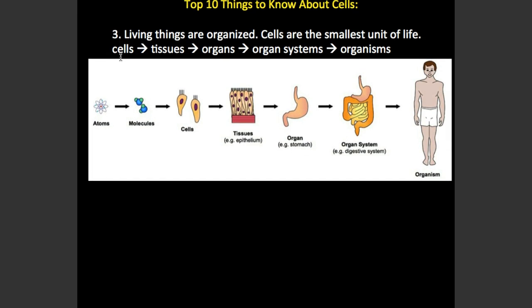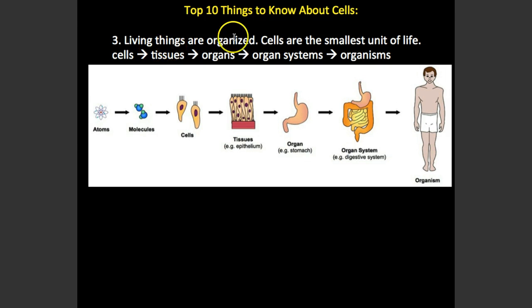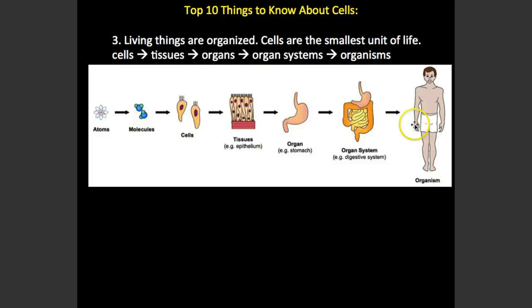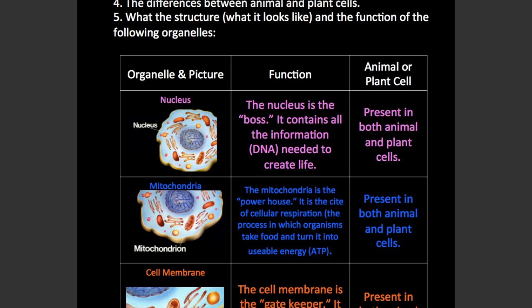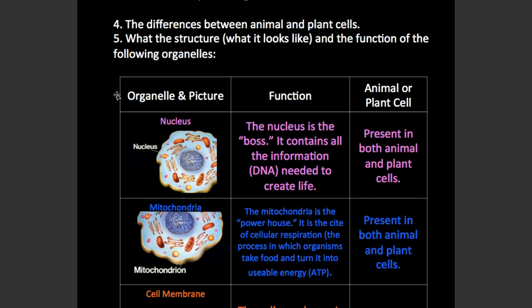All living things are organized. It starts off with cells right here — this is where life first begins. Then you have tissues, organs, organ systems, and organisms. We did talk about this in a previous video this year; the link is at the bottom of your screen, and I highly suggest that you re-watch it. So before you have cells, you have organelles.